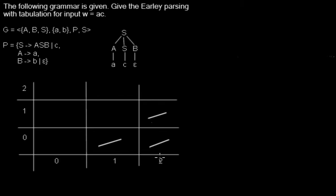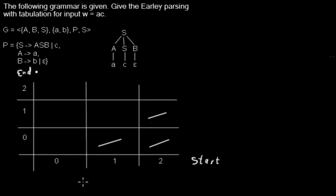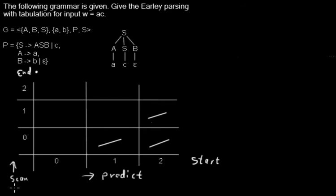What the indices mean is the following. These indices say where an item starts, and these indices say where the position of the dot is — so what we've already seen on the item, or where it ends depending on where the dot is. In general, moving the table in this direction to the right is by predict steps, and moving in this direction is by scan or by complete.